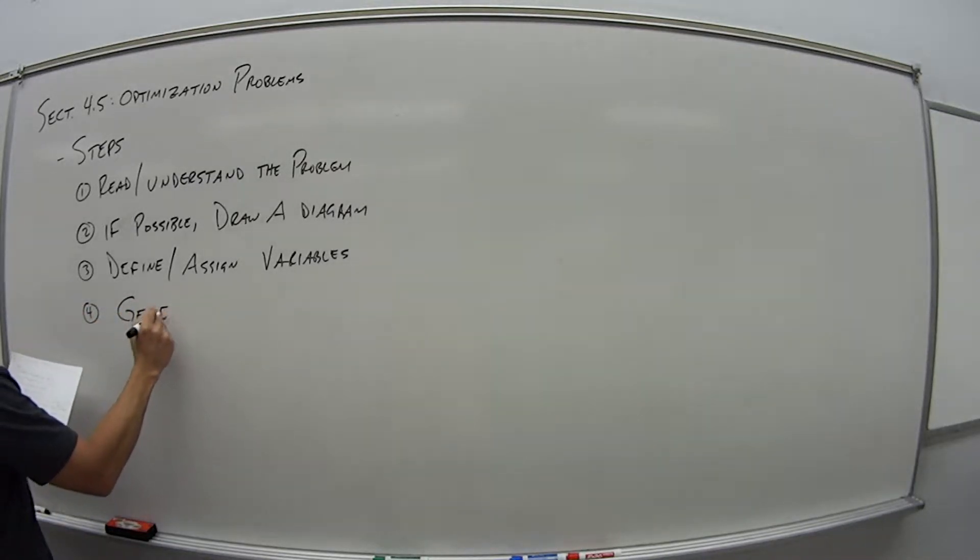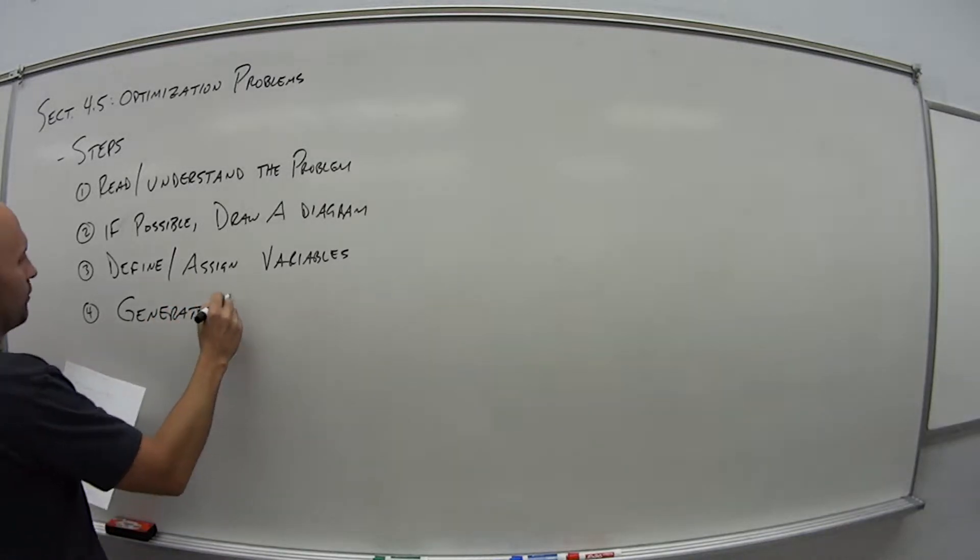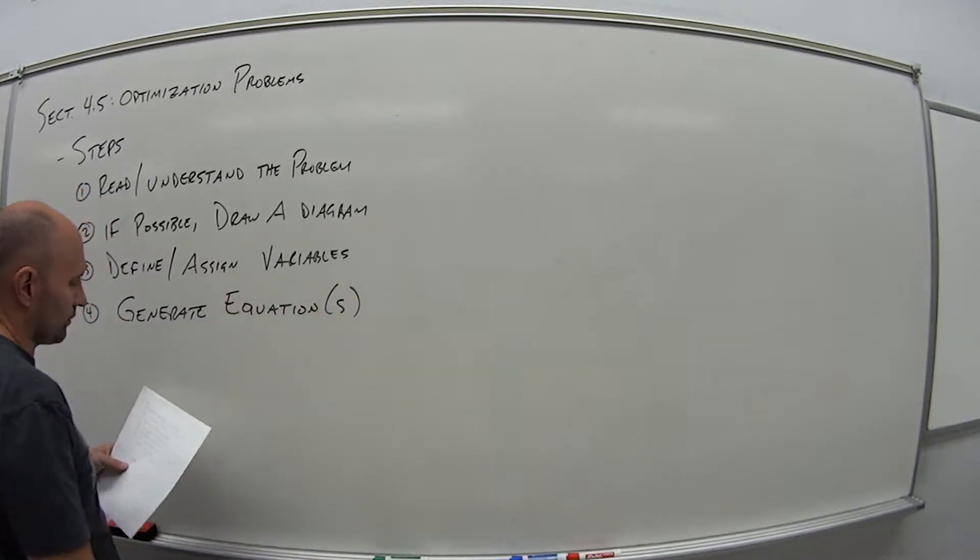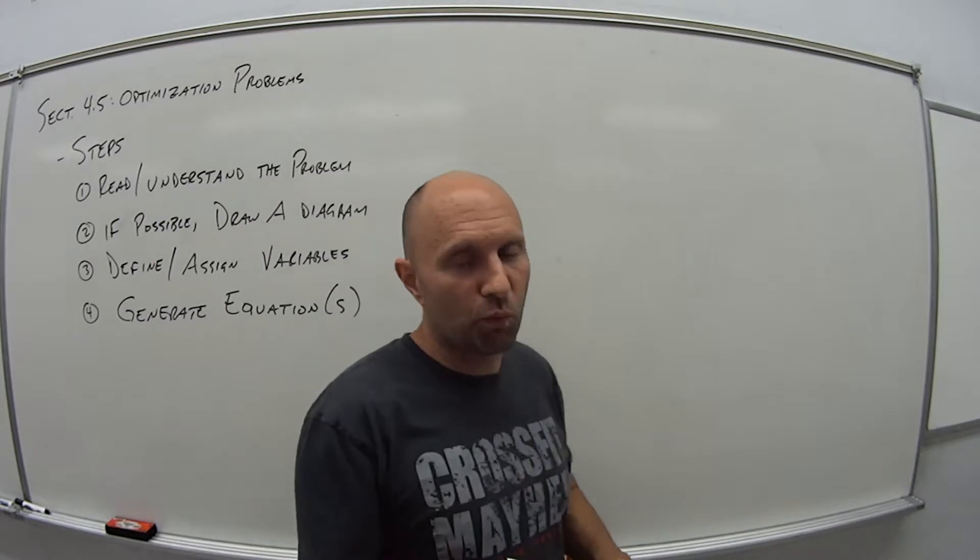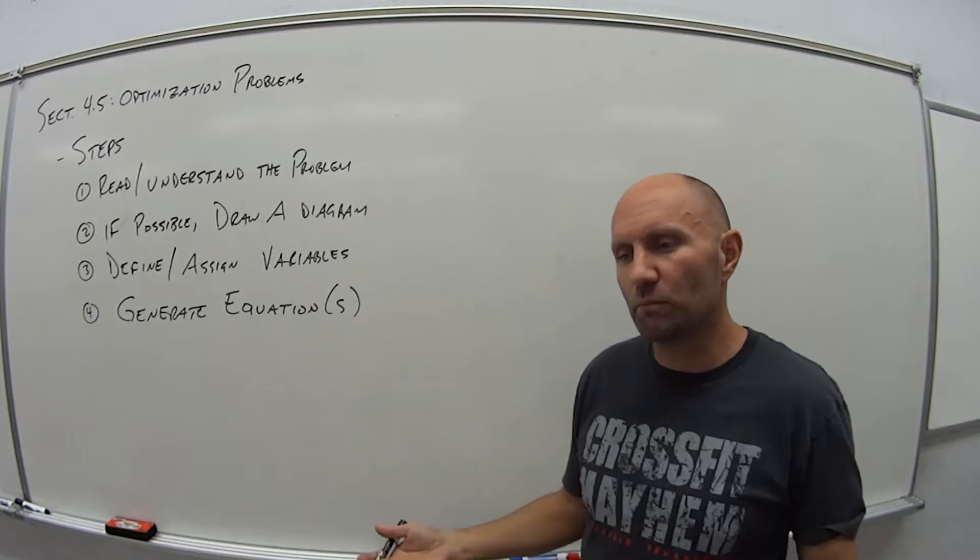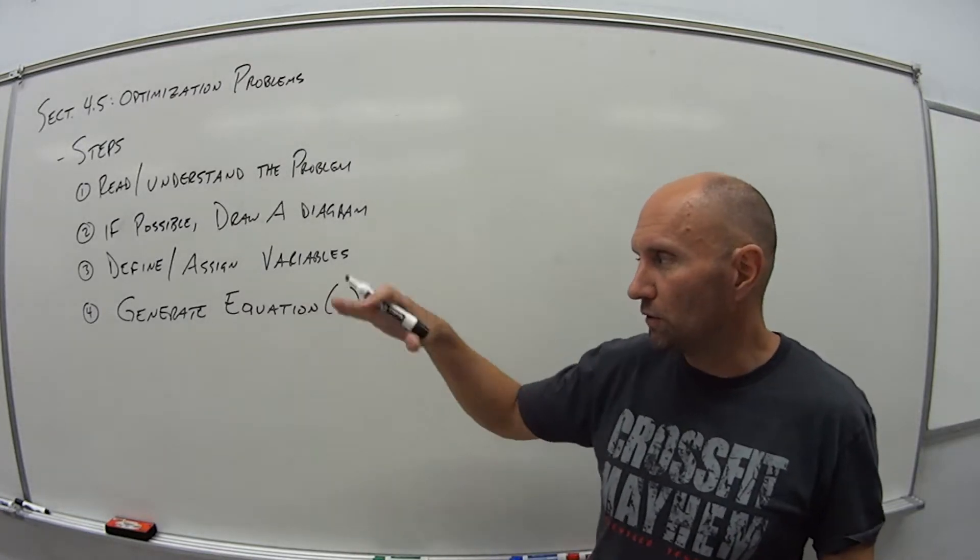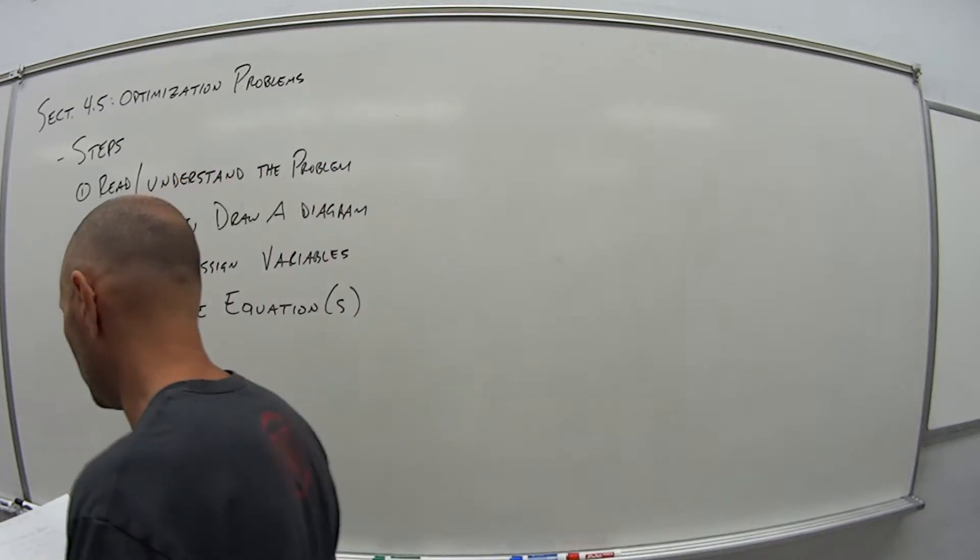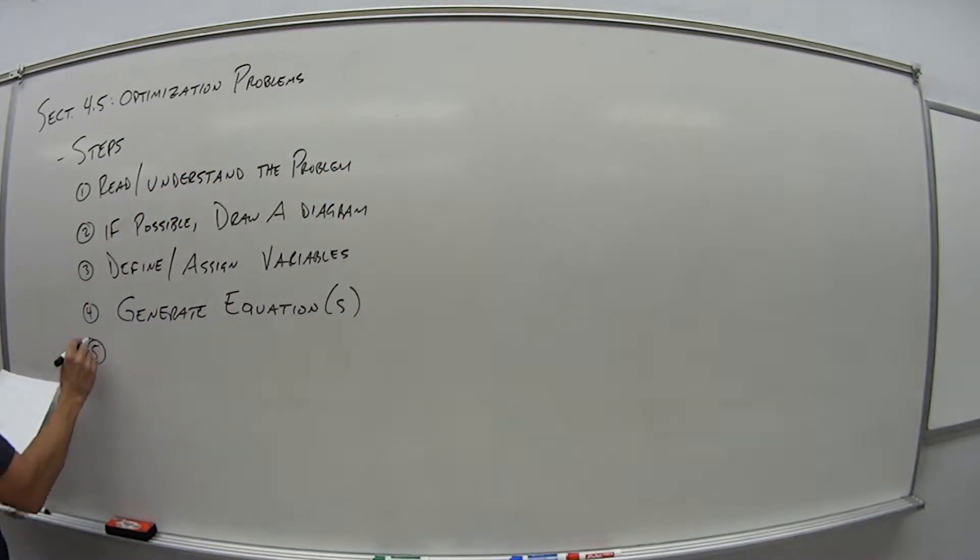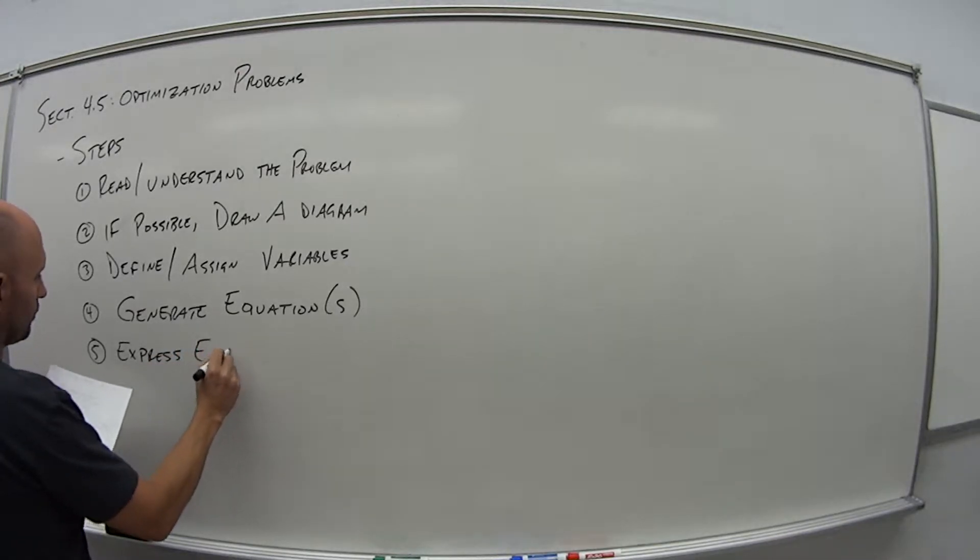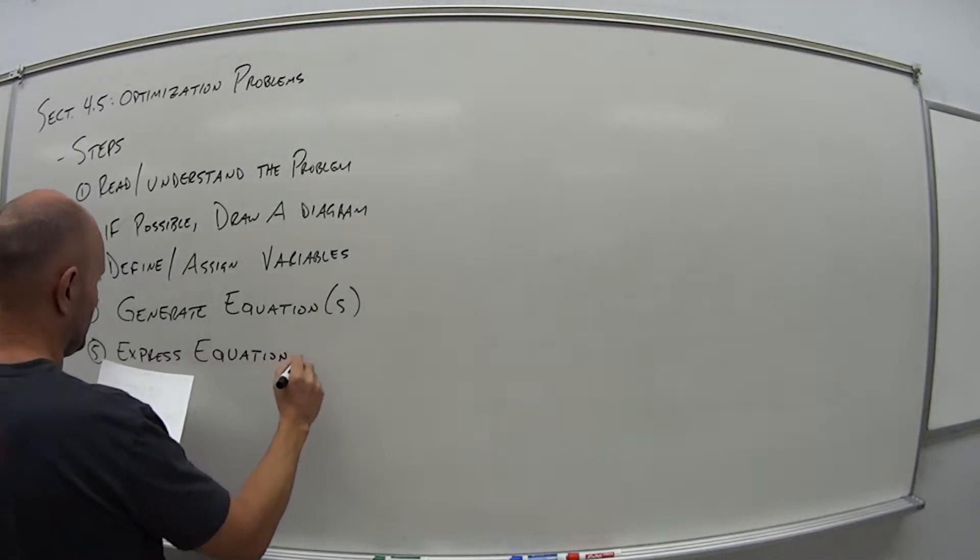Once you have that, then go ahead and try to generate an equation or sometimes you have to maybe put a couple of them together. Because ideally, we just want one equation with one unknown in order to be able to perform these optimization problems. But we may start with an equation that has a couple of different variables. So we need to build a few equations so that we can start either doing elimination or substitution in order to optimize the problem. So that's what step five is, is express the equation of one of the equations we wrote in one variable.